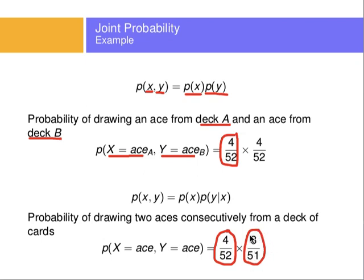So if these two events X and Y are dependent on each other — getting an ace from a deck of cards and then getting another ace from the same deck are dependent, because the second draw depends on what happened the first time — it's the probability of the first event, 4 over 52, times something called the conditional probability: what's the probability of the second event given what happened with the first event? And so we start our journey to conditional probabilities.